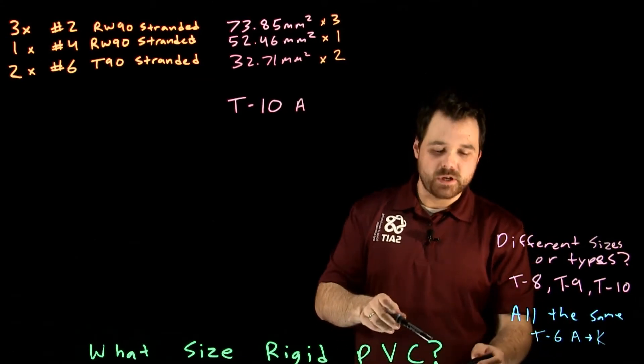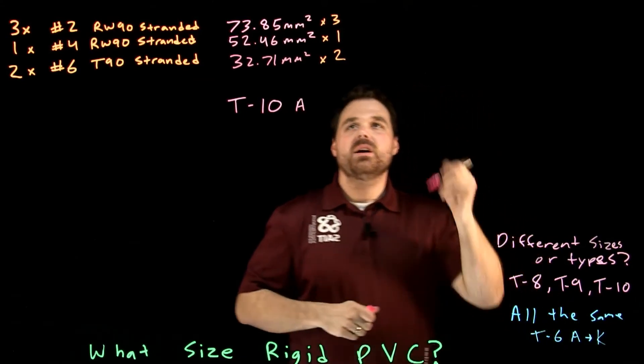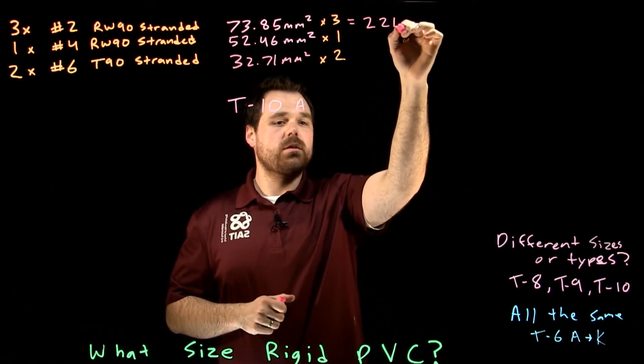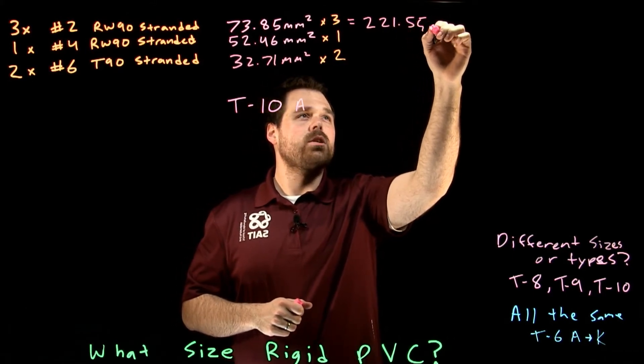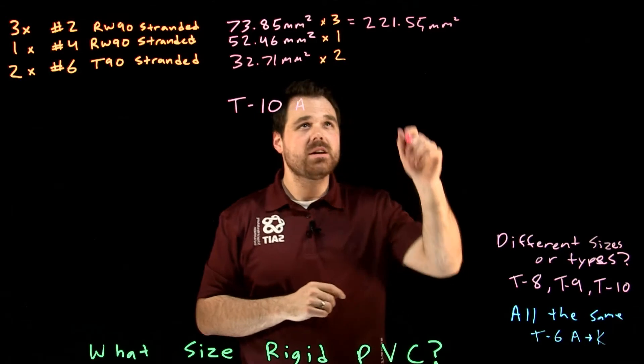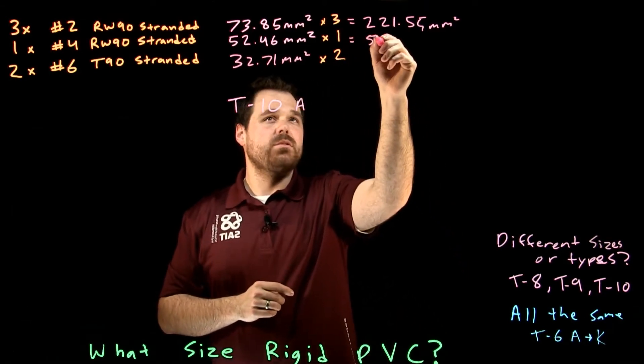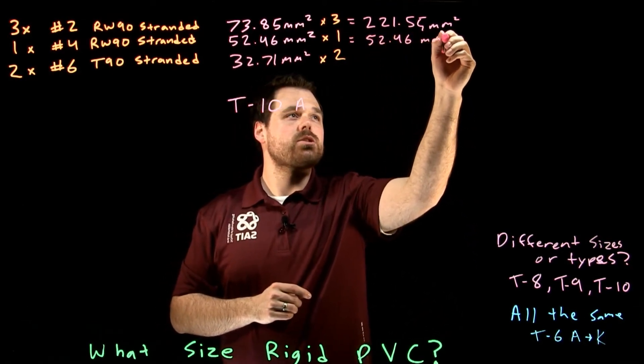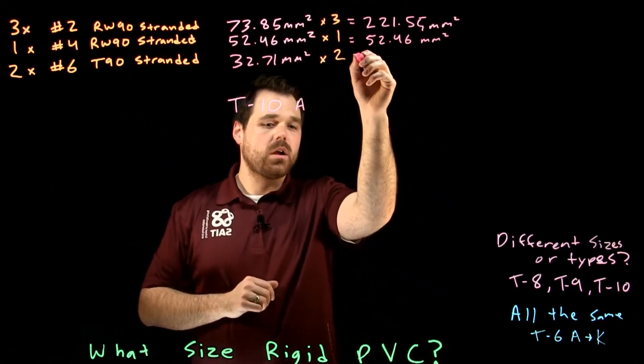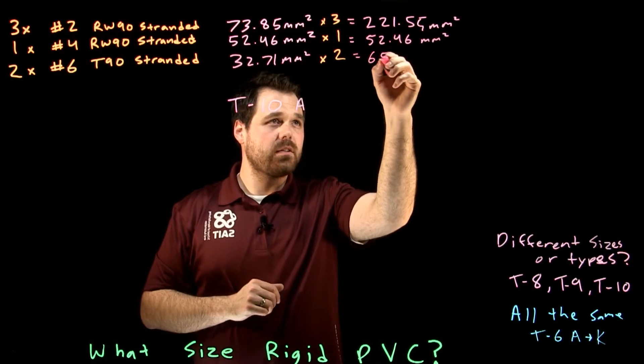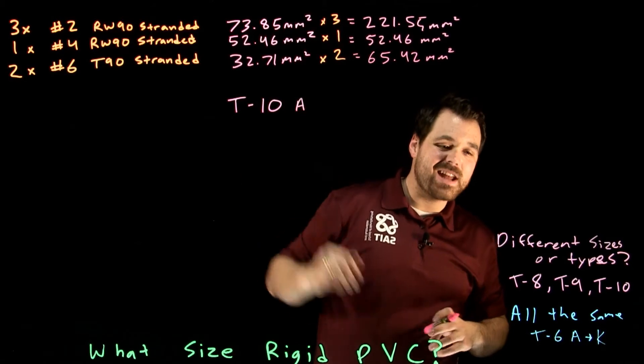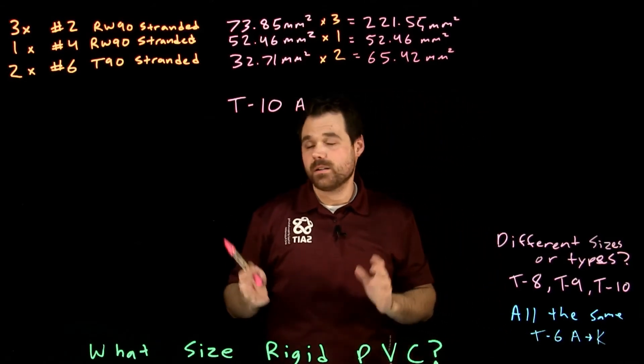So we do the math really quick. That gives us two hundred and twenty one point five five millimeters squared for my three number two RW90s. We get fifty two point four six millimeters squared for my one number four. And we get sixty five point four two millimeters squared for my two T90 number sixes.